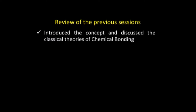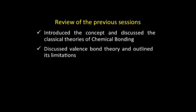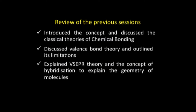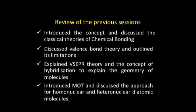Let us begin by recalling what we have done so far. We started by introducing the concept of chemical bonding and discussed the classical theories. Having done that we moved on to valence bond theory and outlined its limitations. We then took up VSEPR theory and the concept of hybridization, which is based on valence bond theory, to explain the geometry of molecules. Towards the end we took up molecular orbital theory and discussed it for homonuclear and heteronuclear diatomic molecules.